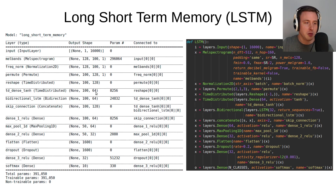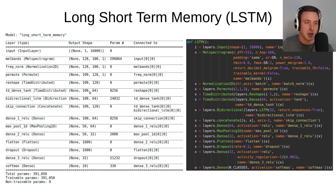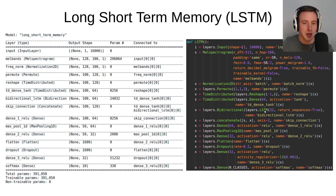Before entering the LSTM, you can do a bit of feature learning with a time distributed dense layer. I take 64 activation units using hyperbolic tangent, looking at the 128 features and reducing them a bit to try to learn more relevant features before entering the LSTM. This actually greatly improved performance.